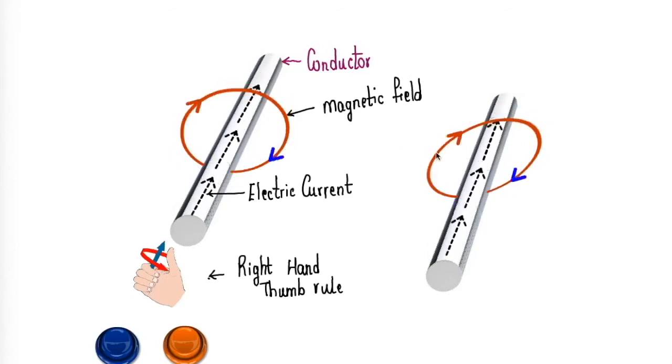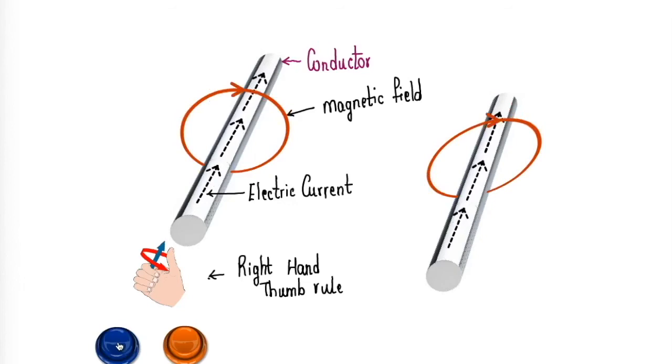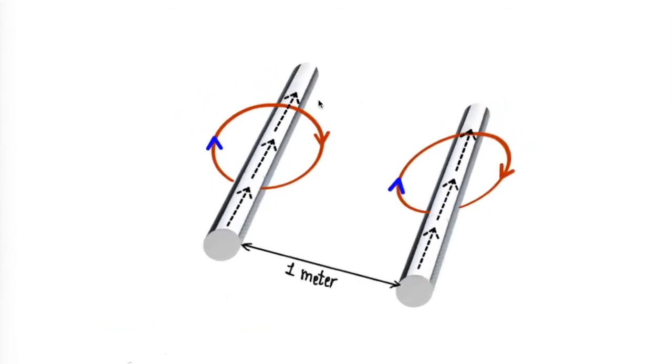So obviously, these two conductors will get attracted towards each other, and the definition is depending on this force of attraction. Let us see. Now, when these conductors are at one meter distance from each other, there exists an attractive force between these two conductors.